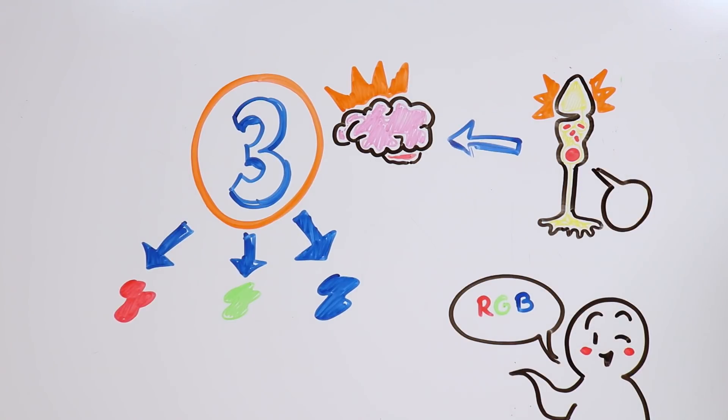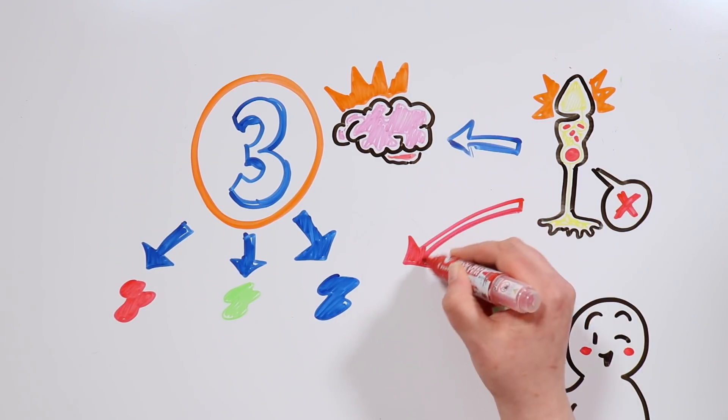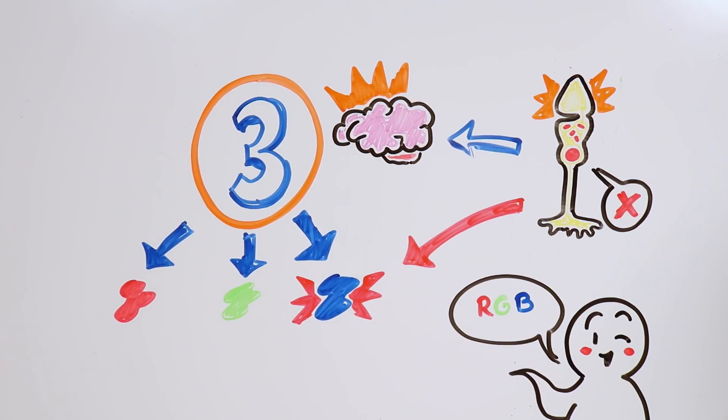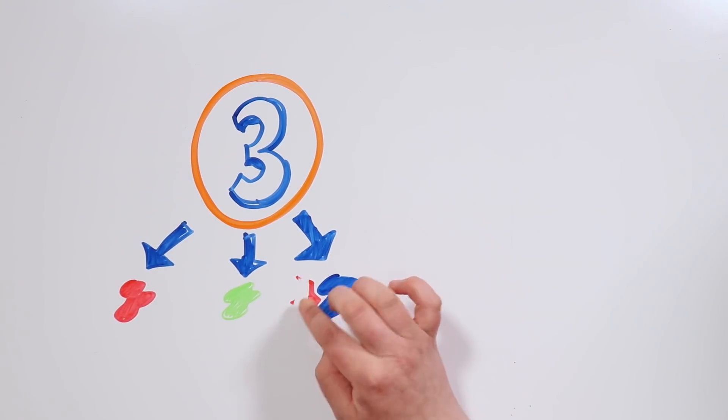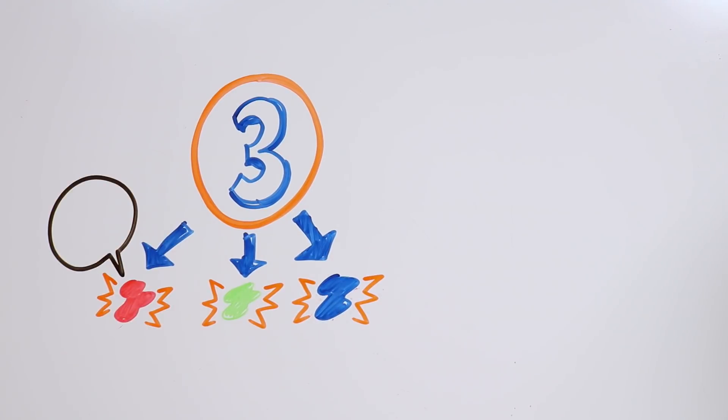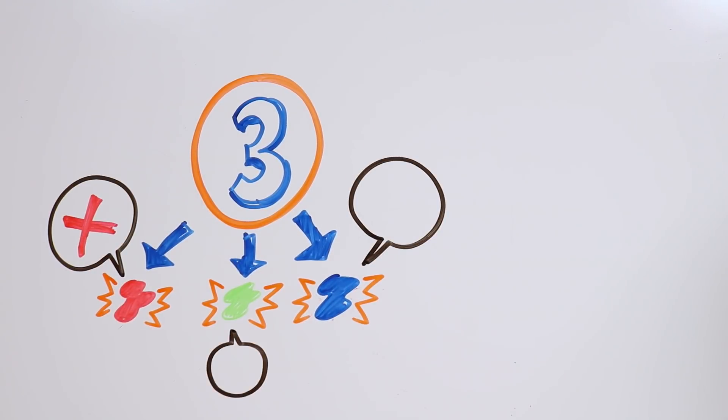However, there will be issues if one or more of the cones are missing, or if they are not working properly, or if they are detecting different colors than normal. The most severe type of color blindness occurs when all three types of cones are missing, and the most mild occurs when the three types are present but one of them is not working correctly.